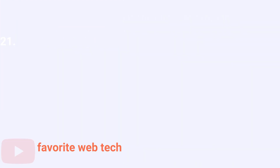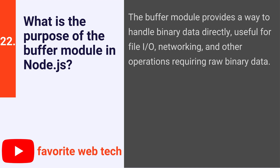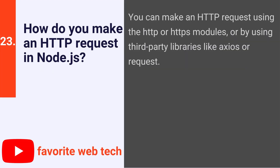What is the purpose of the buffer module in Node.js? The buffer module provides a way to handle binary data directly, useful for file I/O, networking, and other operations requiring raw binary data. How do you make an HTTP request in Node.js? You can make an HTTP request using the HTTP or HTTPS modules, or by using third-party libraries like Axios or Request.